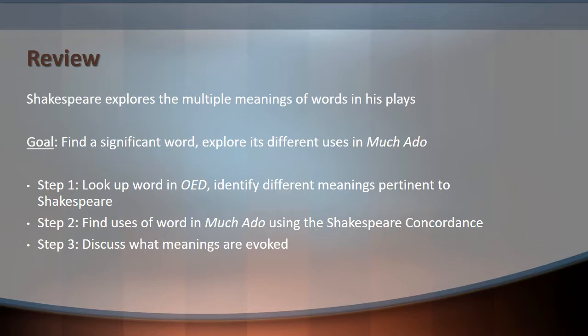The basic steps are: look up the word in the Oxford English Dictionary, identify the different meanings that are pertinent and would have been current in Shakespeare's time, then use the Shakespeare Concordance to find where that word is used in Much Ado About Nothing. Then we look at individual meanings and discuss what meanings are evoked based on the different possible definitions.